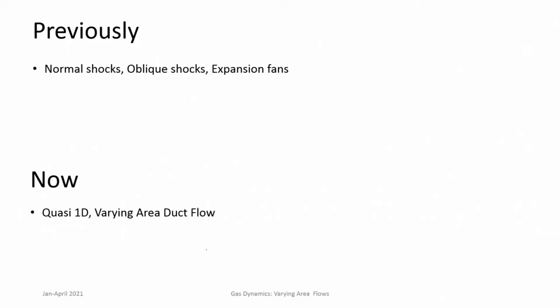Concepts like stagnation pressure, stagnation temperature, and importantly the concept or the assumption of quasi-1D flows — that is flows where we assume that flow properties remain uniform across the cross section — are also carried forward. With those assumptions we look at varying area flows.